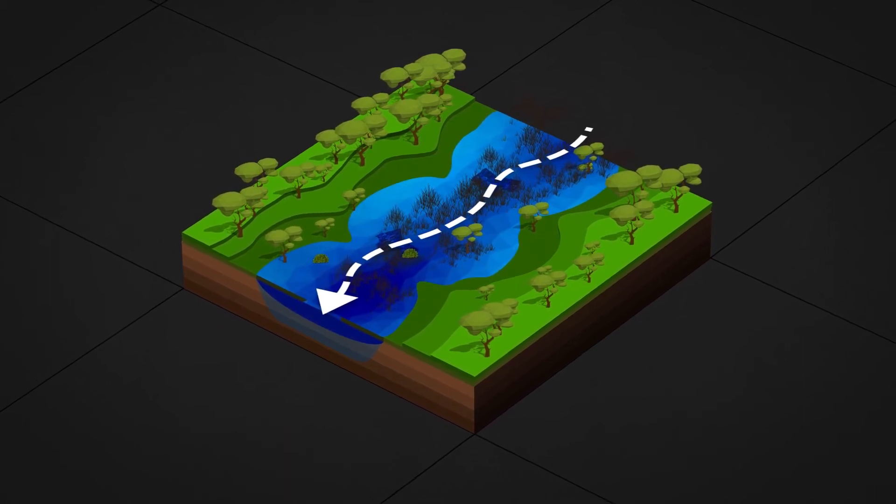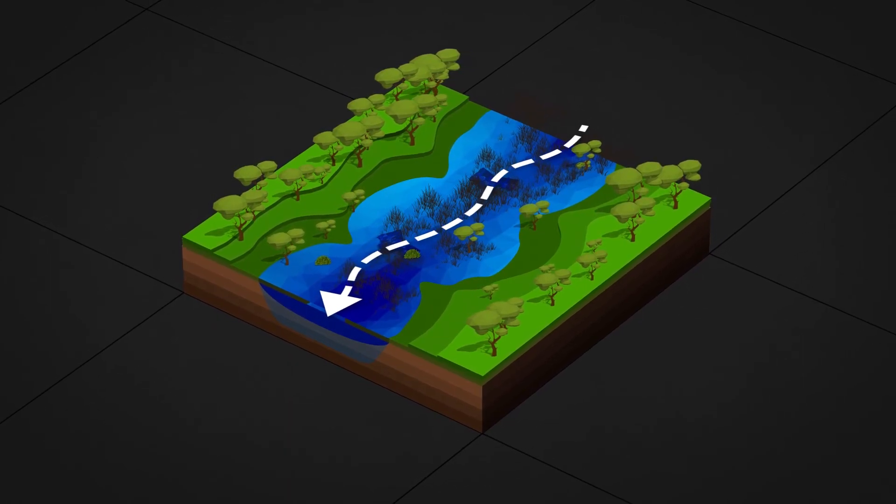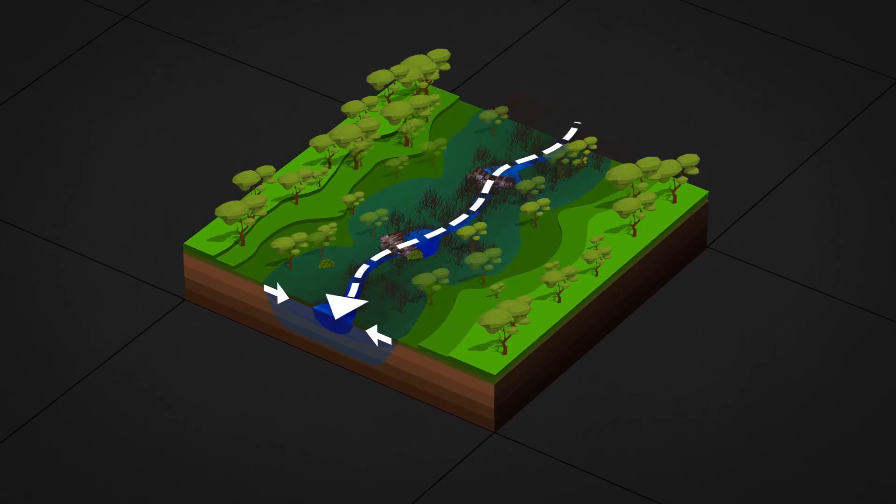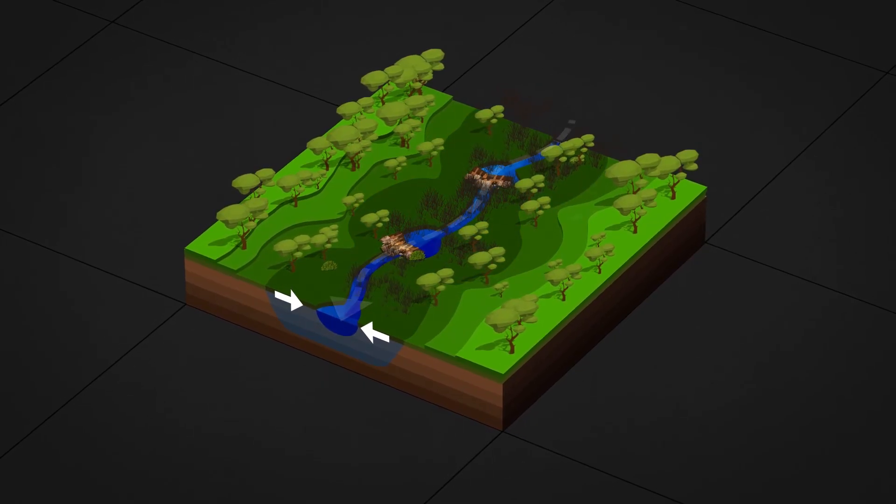During wet times, the flow spreads out across the floodplain. In dry times, the water flow remains beneath the surface and replenishes the creek.